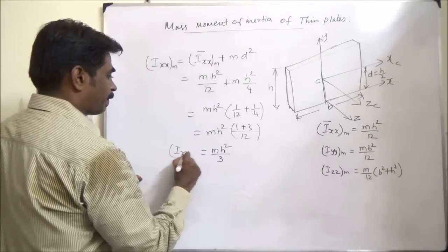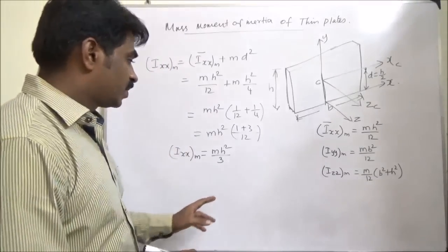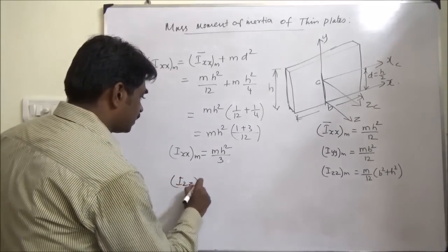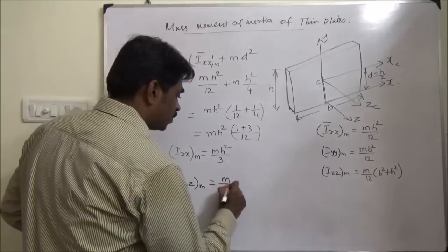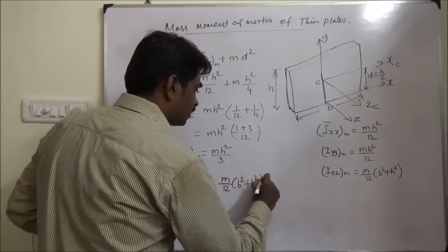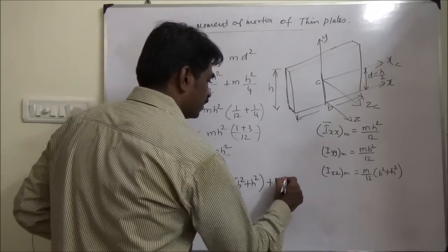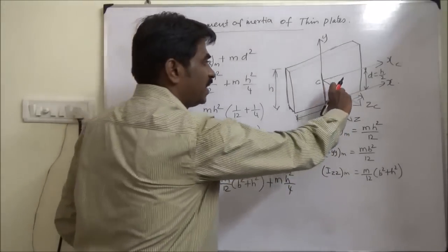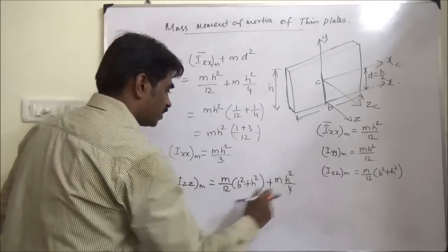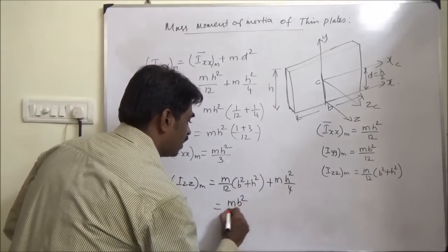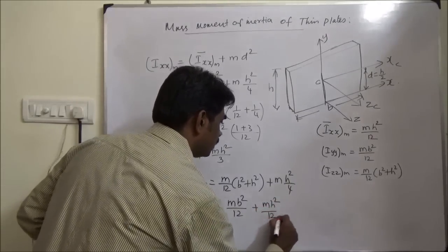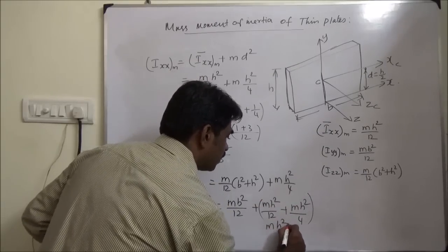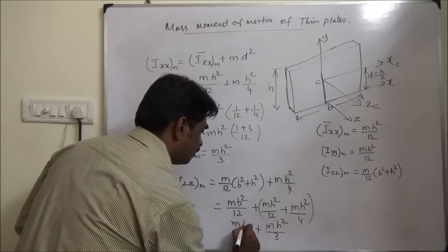So Ixx about the base axis equals M·H²/3. For Izz about the base axis, we apply the parallel axis theorem: Izz = M(B² + H²)/12 + M·H²/4, where H/2 is the distance between the two axes. This simplifies to M·H²/3 + M·B²/12.